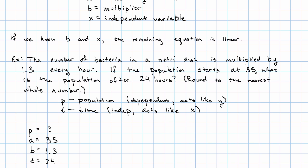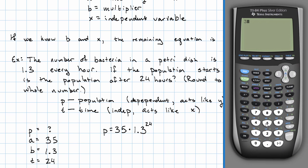Plugging into our basic form, P is 35 times 1.3 to the 24th power. We don't want to work that out by hand, but on the calculator, 35 times 1.3 to the 24th power. Round to the nearest whole number.